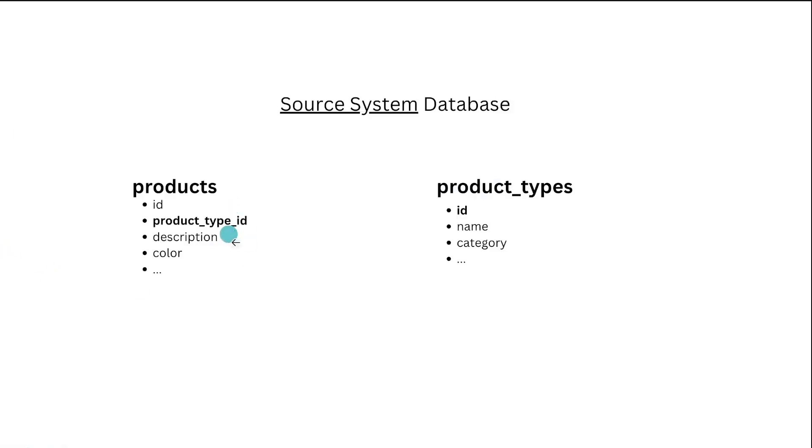Each product has a type, and there is a product type table available in the source system. So do you create a dim product type table, or do you combine it with dim products and have one table? The ultimate question was: which is the right and best approach?